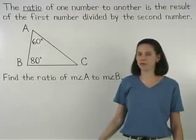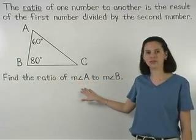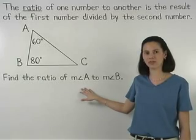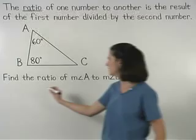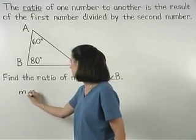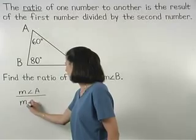For example, in the diagram shown, if we're asked to find the ratio of the measure of angle A to the measure of angle B, we take the measure of angle A divided by the measure of angle B.